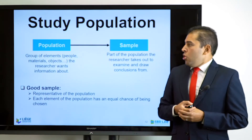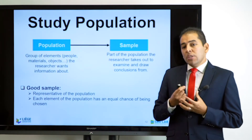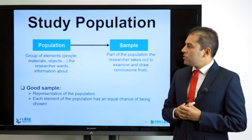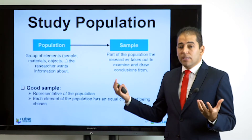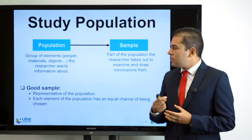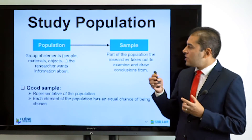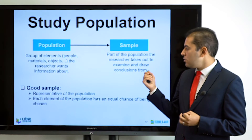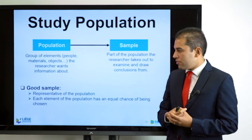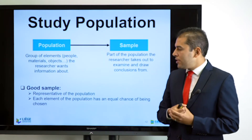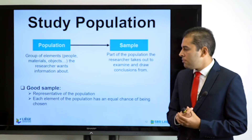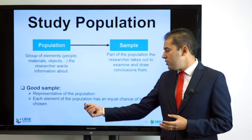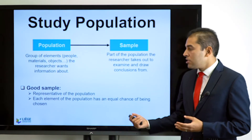The first aspect when we talk about randomization is sampling. When talking about sampling, we need to study the population — the group of elements, people, materials, subjects, or objects that the researcher wants information about. We take a sample from this population, which is the part the researcher examines to draw a conclusion. We need to ensure we have a good sample representing this population, and that each element has an equal chance of being chosen.